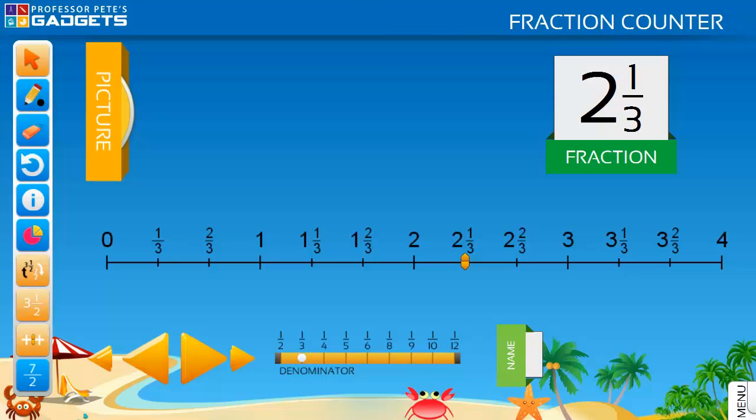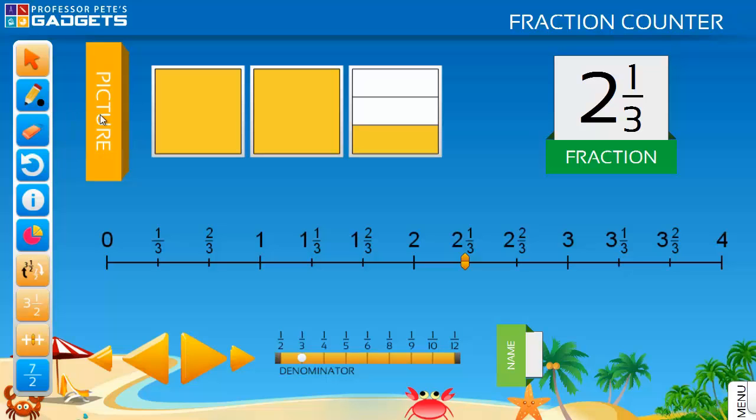Place the marker on the blank number line and have your students draw the shapes to make up the mixed number.